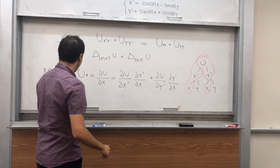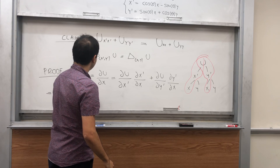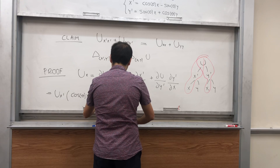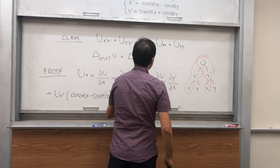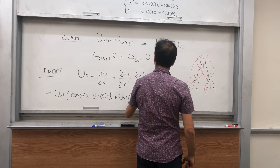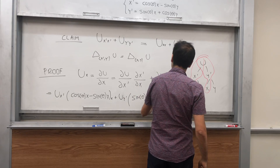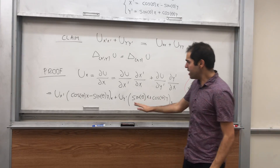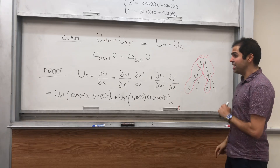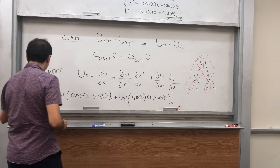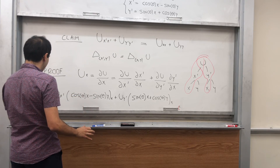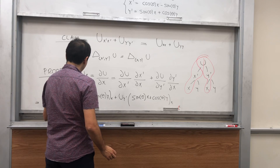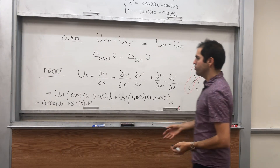Now, x prime is cosine theta times x minus sine of theta times y, so its derivative with respect to x is cosine theta. And y prime equals sine of theta times x plus cosine theta times y, so its derivative with respect to x is sine theta. Very importantly for this video, theta does not depend on x. So u_x becomes cosine theta times u_x' plus sine of theta times u_y'.